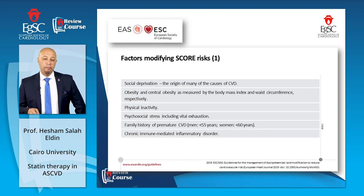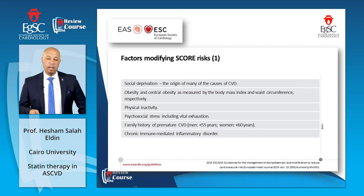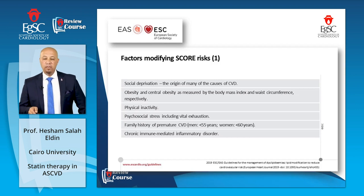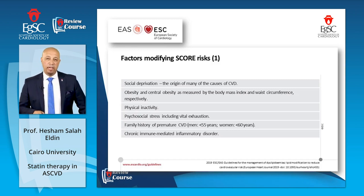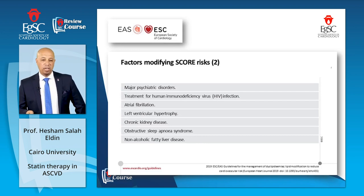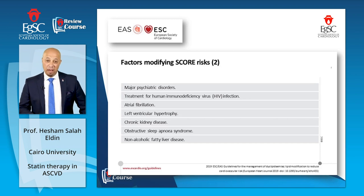Some factors are not calculated in the risk score but may contribute to cardiovascular risk. These score modifiers include social deprivation, obesity — particularly central obesity — physical inactivity, psychosocial stress, family history of premature cardiovascular disease (men under 55 or women under 60), and chronic immune-mediated inflammatory disorders. Other major modifiers include major psychiatric disorders, HIV treatment, atrial fibrillation, LVH, chronic kidney disease, obstructive sleep apnea, and non-alcoholic fatty liver disease.